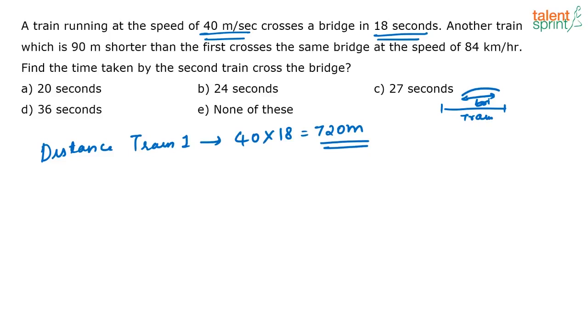Next what are they giving? They are saying that another train which is 90 meters shorter than the first crosses the same bridge at a speed of 84 kilometers per hour. So first 84 kilometers per hour means you should take it as 84 into 5 by 18 meters per second. This is the speed of the second train.